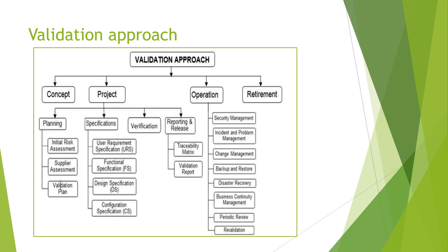The project phase has four sub-categories: planning phase, specification phase, verification phase, and reporting/releasing phase. In the planning phase, we create the validation plan — covering roles and responsibilities, deliverables, and how to handle discrepancies. We also perform an initial risk assessment to determine whether the system is a GxP system and its categorization, and we perform supplier assessment.